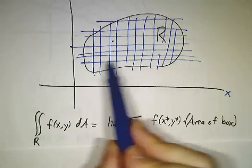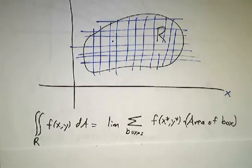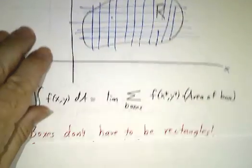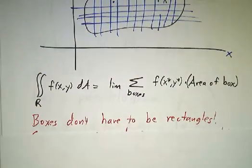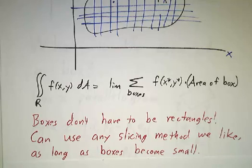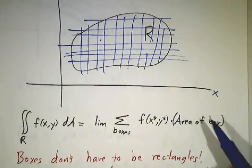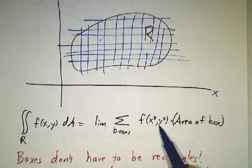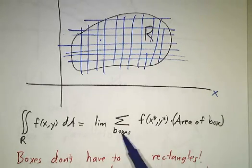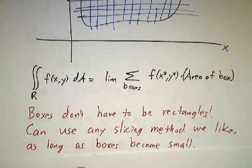Usually we do this by chopping things horizontally and vertically, giving us nice rectangles of width delta x and height delta y. But the boxes don't have to be rectangles. We saw when we did polar coordinates that we could chop things up into polar rectangles. In fact, you can chop it up into any shape you like, as long as the boxes get small and the function value is practically the same at all points within a box. This sum will do a good job of approximating the integral, and when you take the limit, you get the value of the integral.